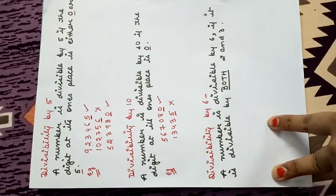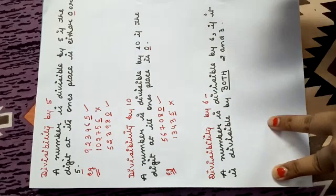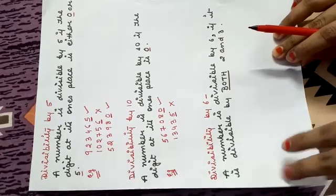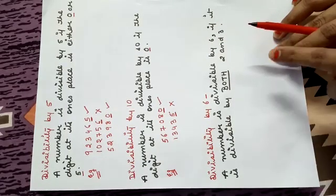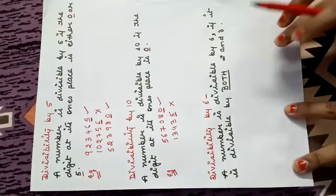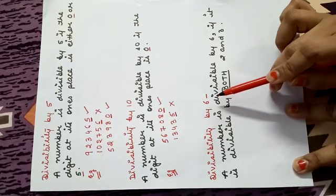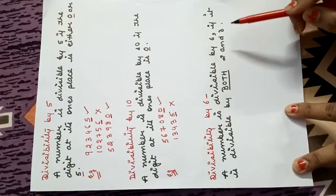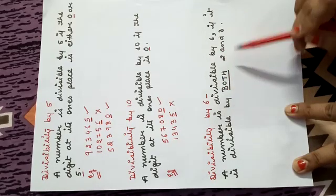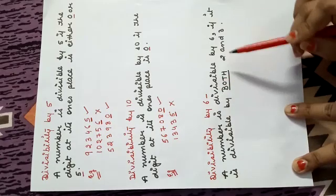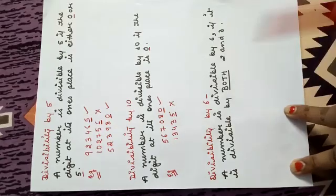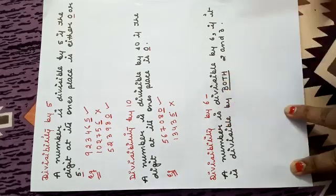Divisibility by 6: A number is divisible by 6 if it is divisible by both 2 and 3. A number will be divisible by 6 only if it is divisible by both 2 and 3, because 6 is a multiple of 2 and 3. So the number that is divisible by both 2 and 3 will be divisible by 6.